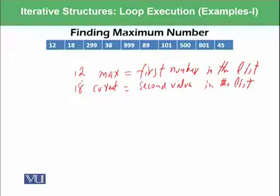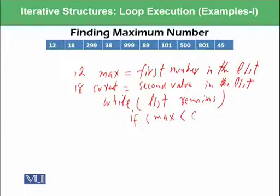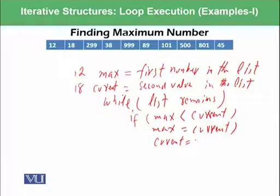We will be comparing 12 with 18 and if max is less than current, the current value will be assigned to max and we will move forward. Until when we will be doing this procedure? Until we have the list. So we can use a while loop: while list remains, until when we have any element in the list we will keep on executing this loop. And the condition could be if max is less than current, max is assigned by current and current is assigned to next value in the list.